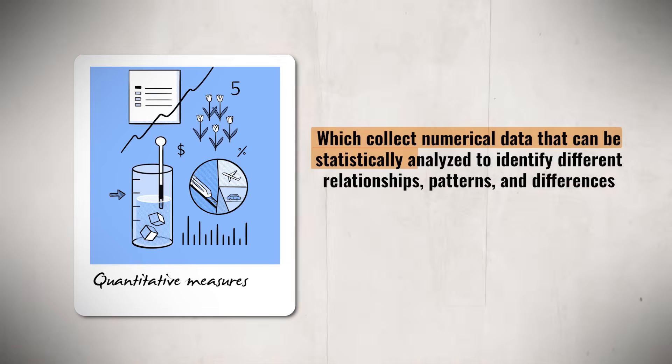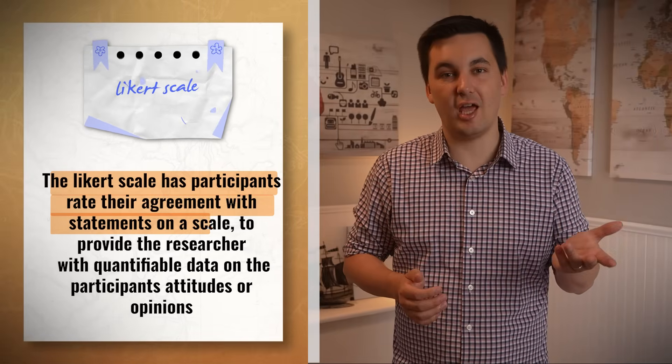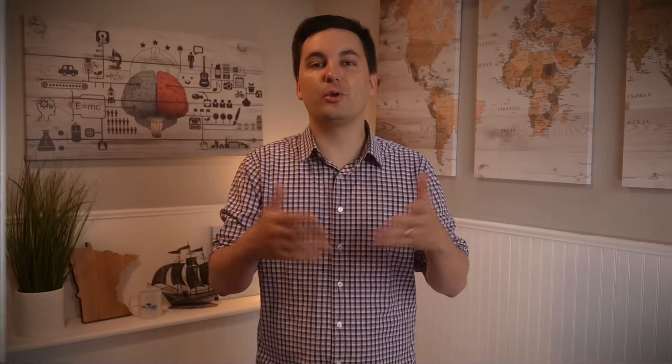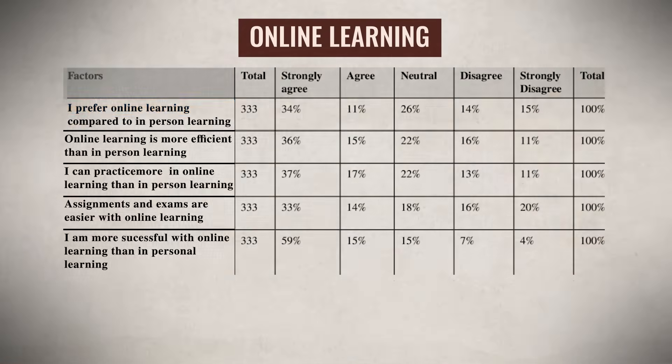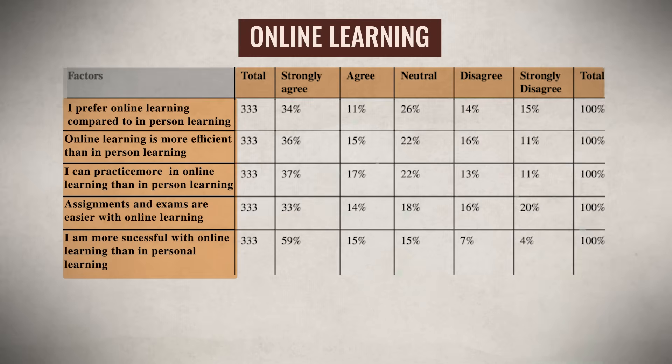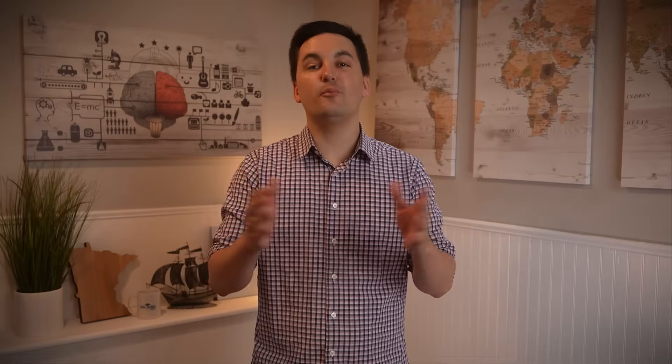Researchers can also use quantitative measures, which collect numerical data that can be statistically analyzed to identify relationships, patterns, and differences. For instance, the Likert scale has participants rate their agreement with statements on a scale, providing quantifiable data on attitudes or opinions. Quantitative measures produce more objective information, allow statistical analysis, and allow the study to be replicated.